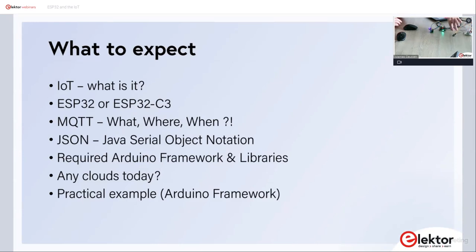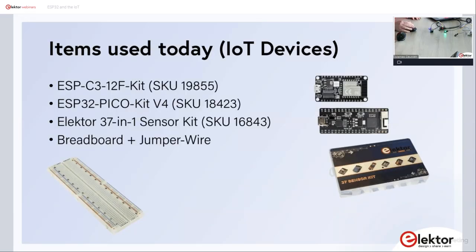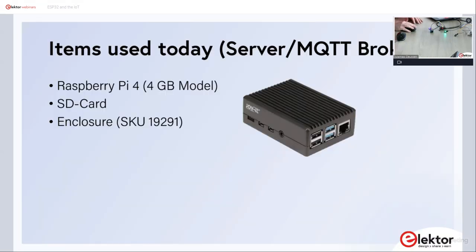We've prepared a few IoT devices here on the desk to show you what they're doing — two buttons and one relay, an extended version of the article. The hardware used today includes an ESP32/12F kit, an ESP32 Pico Kit version 4, the Elektor 37-in-1 sensor kit, a breadboard, and some jumper wires.